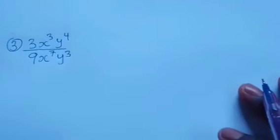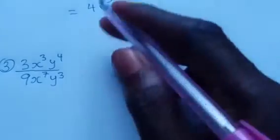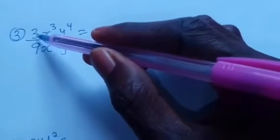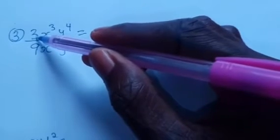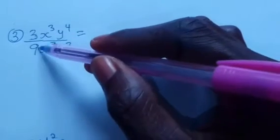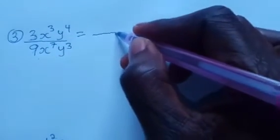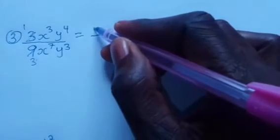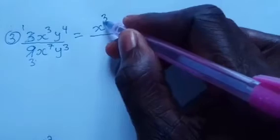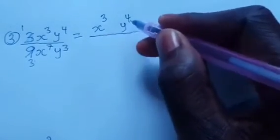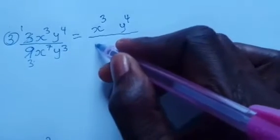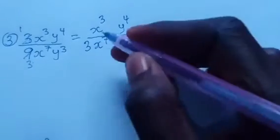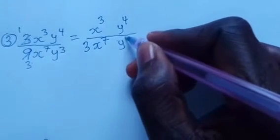Now let us take the third example. We observe we have numbers 3 and 9. These are odd numbers, and 3 can divide both: 3 cancels to 1 and 3 cancels 9 to give 3. So at the numerator we have 1 times x power 3 times y power 4, and at the denominator we have 3x power 7.